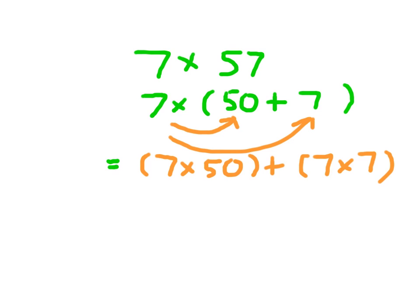In this example, I'm just going to write the 7 times 57 right here. And again, what we did is we broke down the 57 into 50 plus 7.